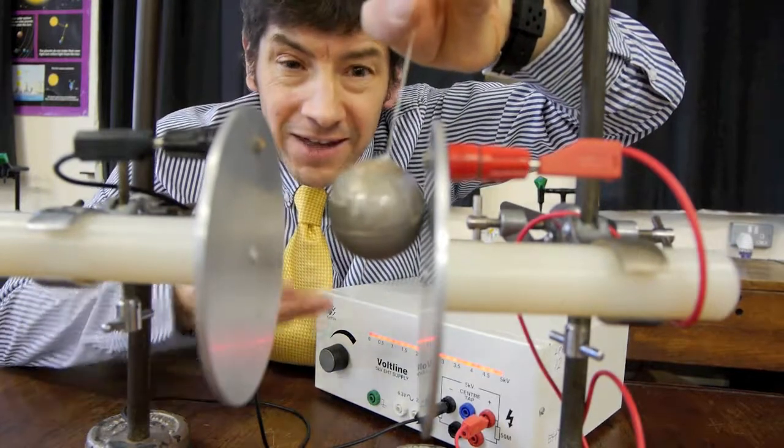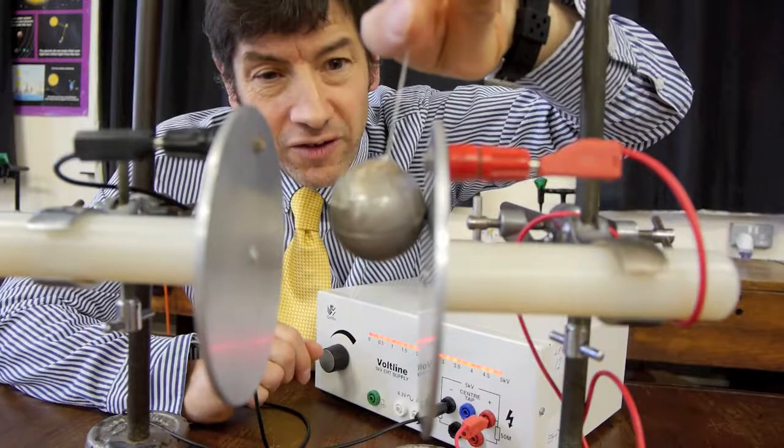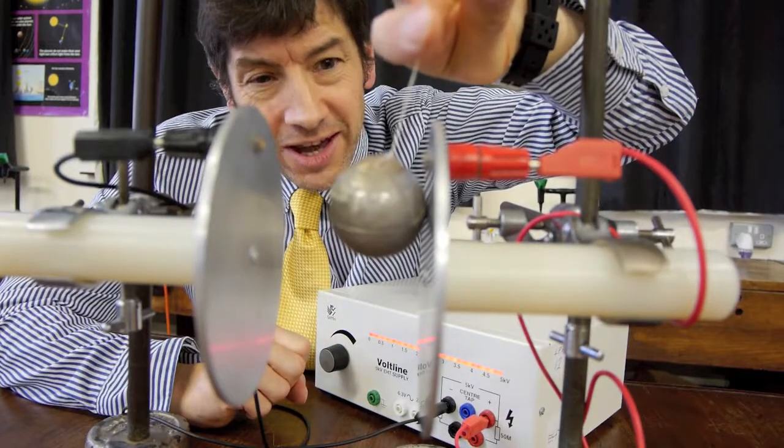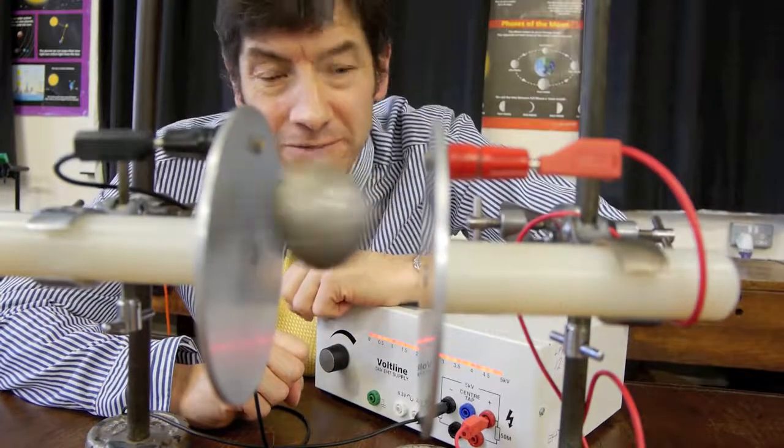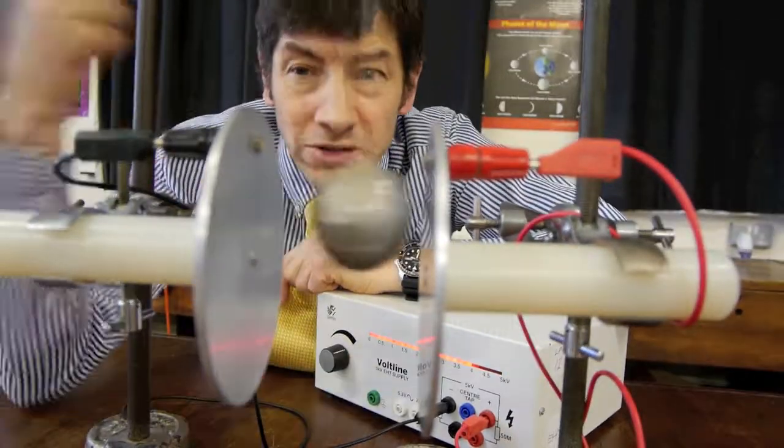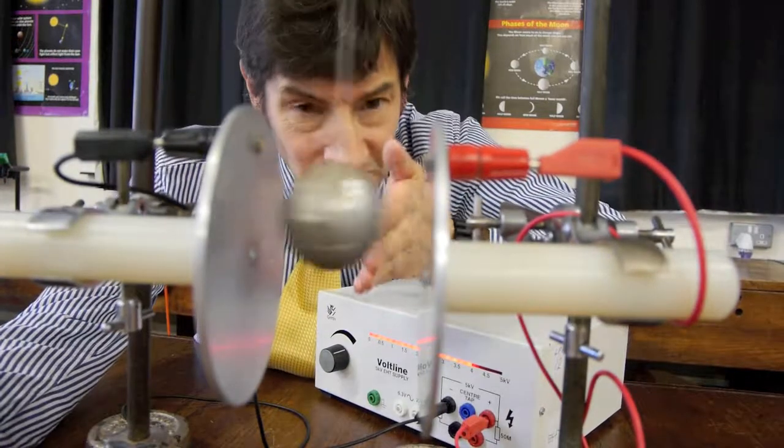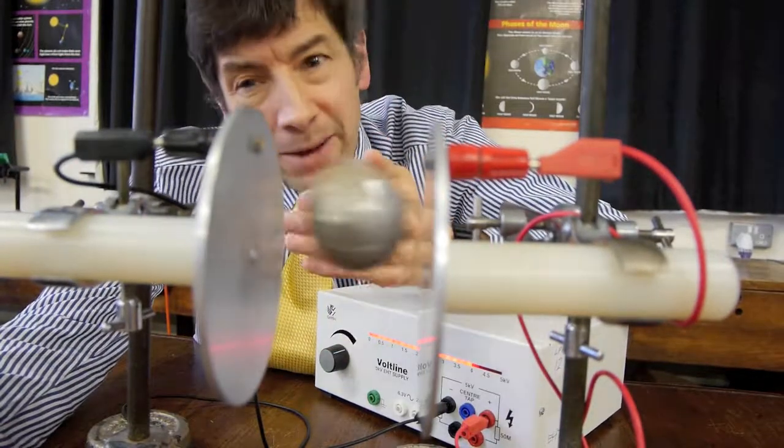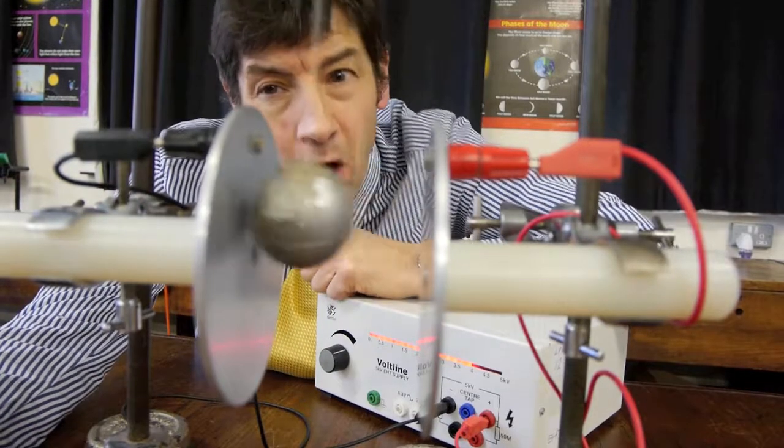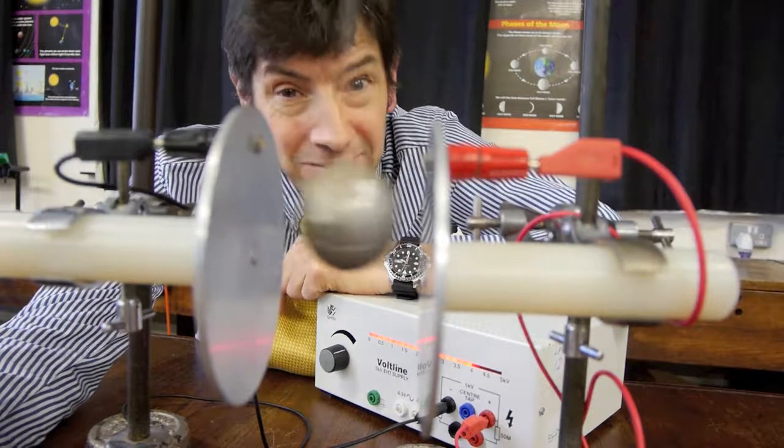But of course then the electrons flow off onto the positive plate, and the ball itself gets short of electrons and now becomes positive and repels. This process goes on backwards and forwards. In other words, the ball touches the negative plate, becomes negative and repels, touches the positive plate, becomes positive and repels, and that process goes on and on for as long as there's a voltage across the gap. In other words, the power supply is turned on.